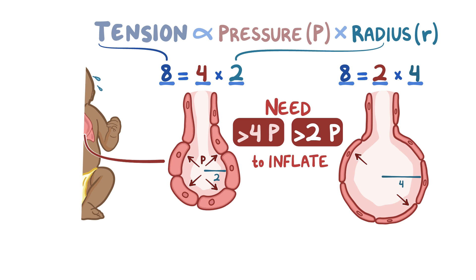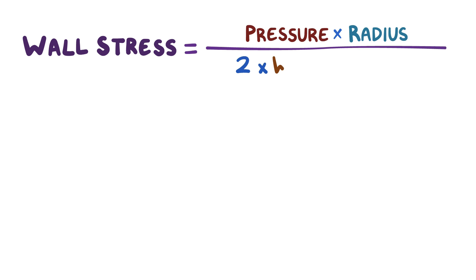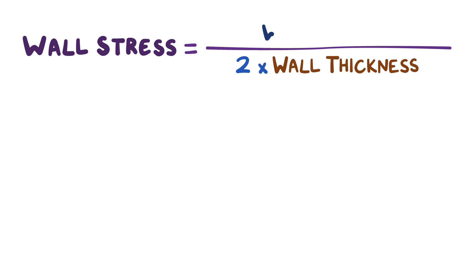A concept related to wall tension is wall stress, which uses a modified version of Laplace's law that factors in the thickness of the wall. The equation for wall stress is pressure times radius over 2 times the wall thickness. Based on this equation, wall stress equals wall tension divided by 2 times the wall thickness. So the thicker the wall, the less wall stress.